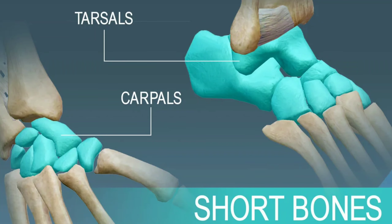The third type is short bones. They are cube-shaped. The wrist and ankle joints contain these short bones.